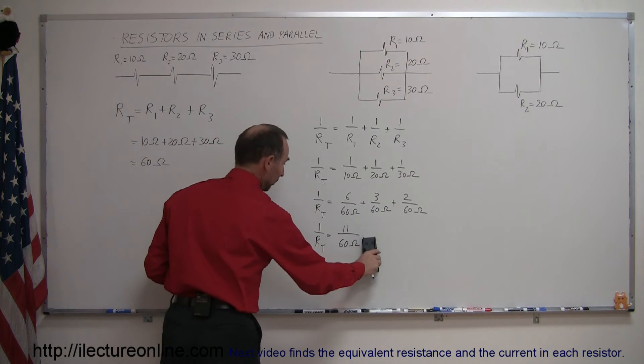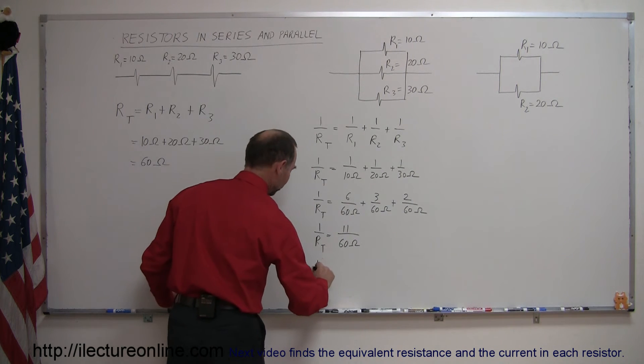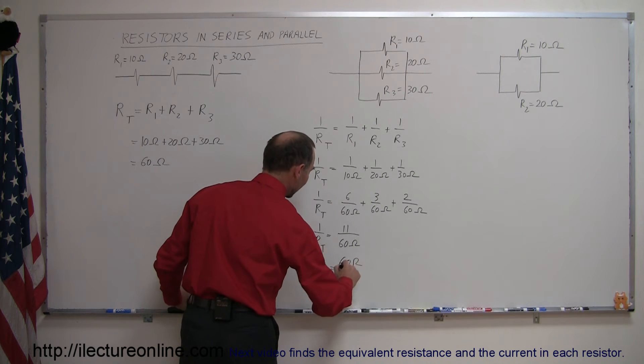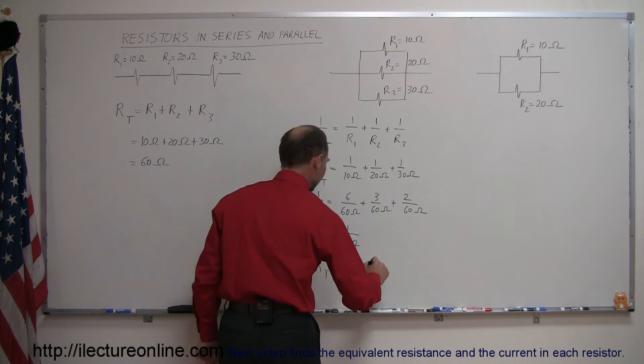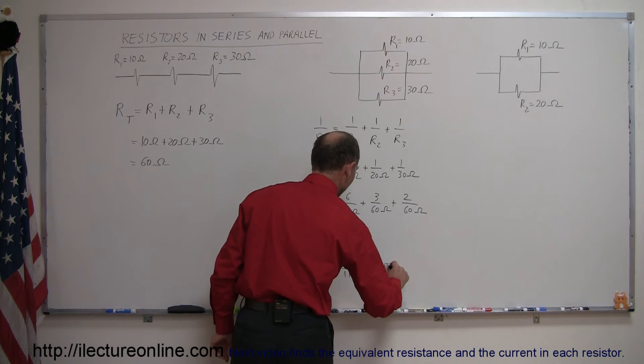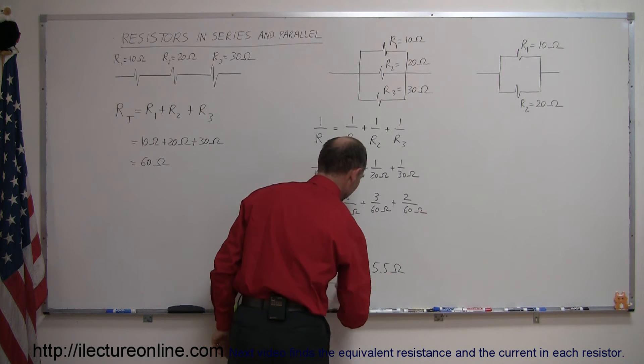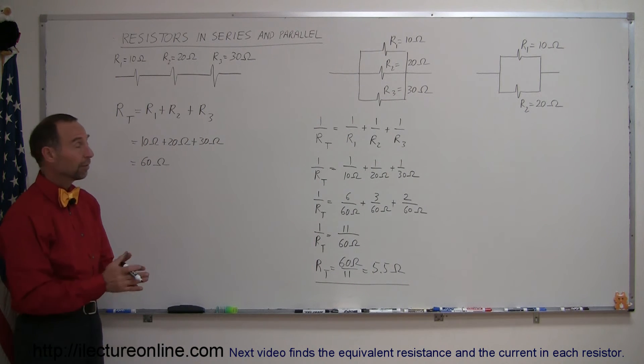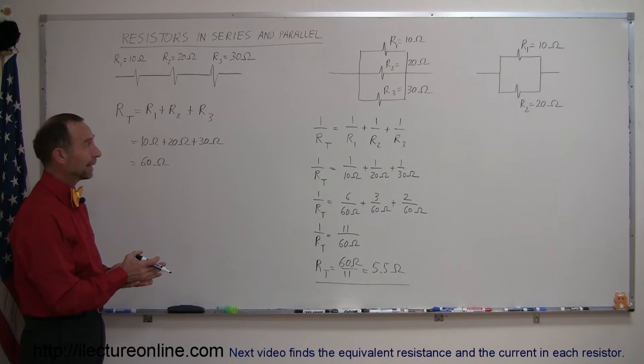And of course then, oh no, we can't say equal. Now we have to take the inverse of that, so R total is the inverse of that which is 60 ohms divided by 11, which would be about 5.5 ohms. So that's how we figure out the total resistance or equivalent resistance when the resistors are in parallel.